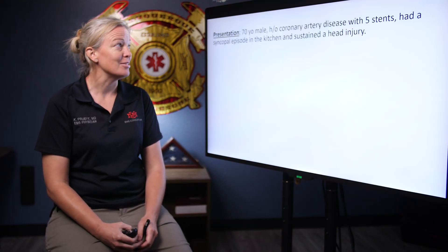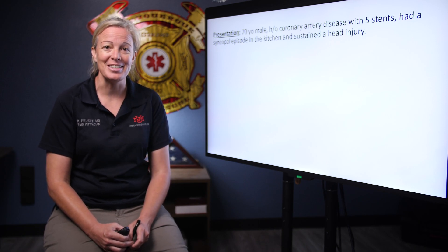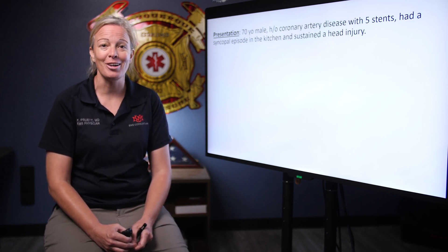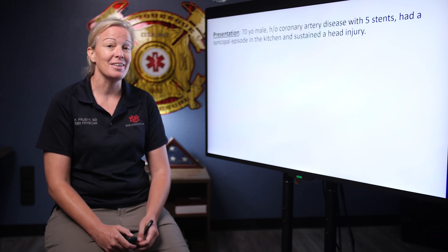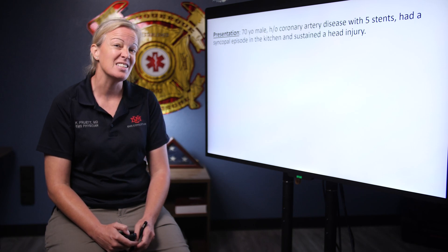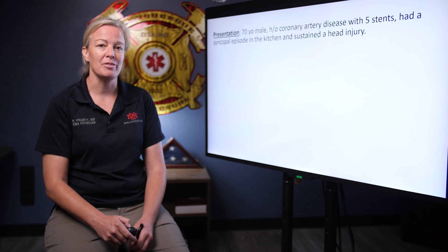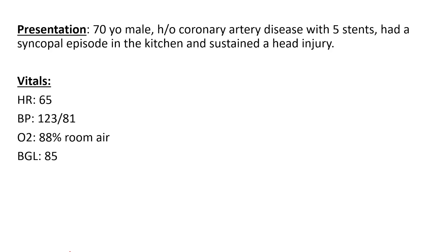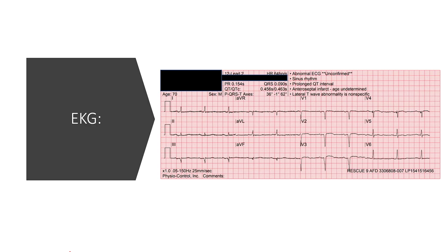We start with our case. We have a 70-year-old male who has a known history of coronary artery disease, and he tells you that he's had five heart attacks and five stents before. He had a syncopal episode in the kitchen and you find him lying on the floor because he couldn't get himself up. He did hit his head when he fell. He's denying chest pain right now. His heart rate is 65, blood pressure in the 120s over 80s. He's a little bit hypoxic on room air and his sugar is 85. This crew quickly got a 12-lead to see if this could potentially have been a cardiac event that led to his fall and his syncopal episode.